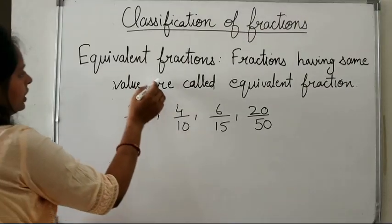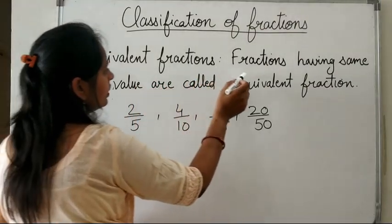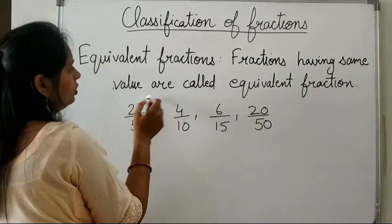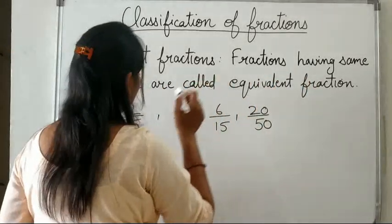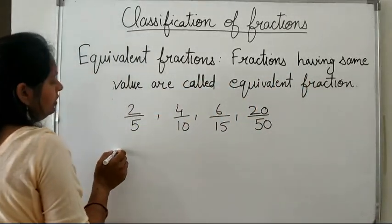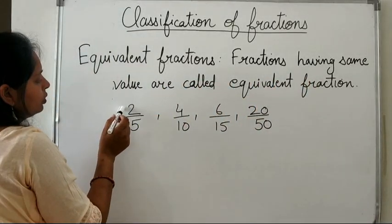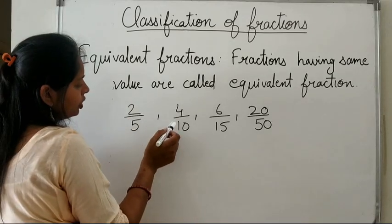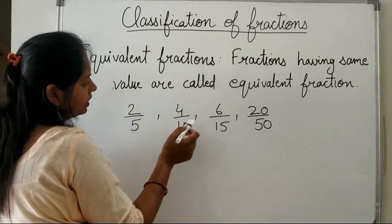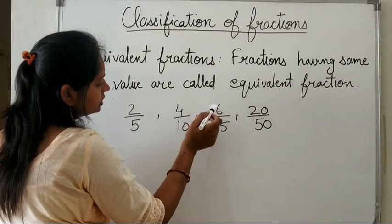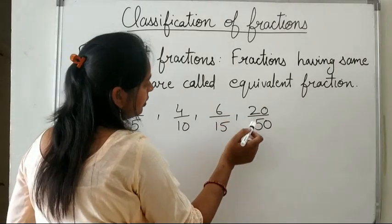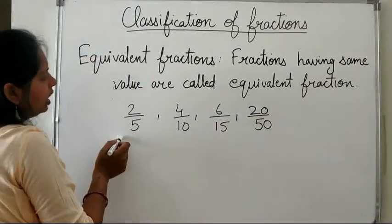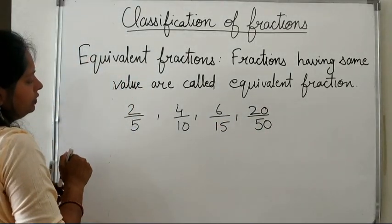Next are equivalent fractions — fractions having the same value are called equivalent fractions. For example, 2 upon 5, 4 upon 10, 6 upon 15, and 20 upon 50 are all equivalent fractions.